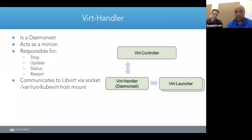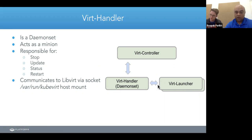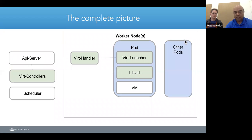The last major component is a DaemonSet called virt-handler. Unlike controllers which are singletons, virt-handler runs on every node. It communicates with virt-launcher via Unix domain sockets to perform operations on virtual machines: stopping, updating, restarting, checking status, and in future even hot-plugging and unplugging. So the three core components are: controllers, virt-handler, and virt-launcher.